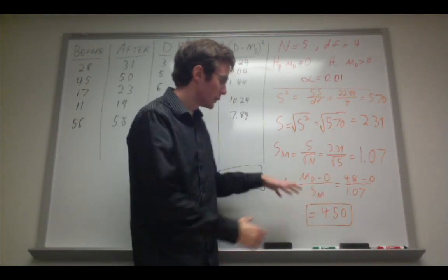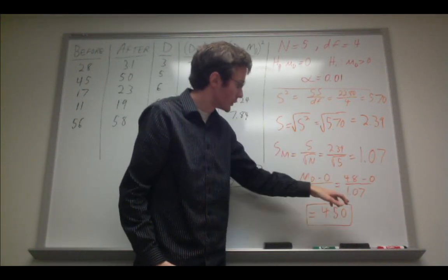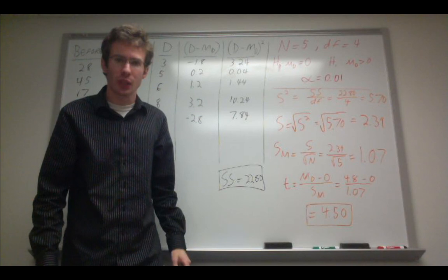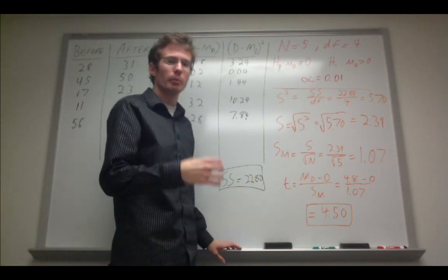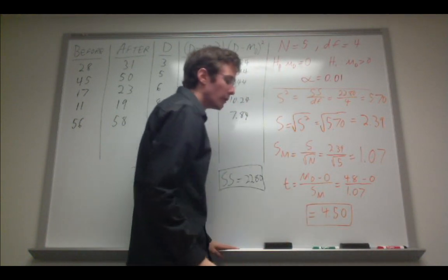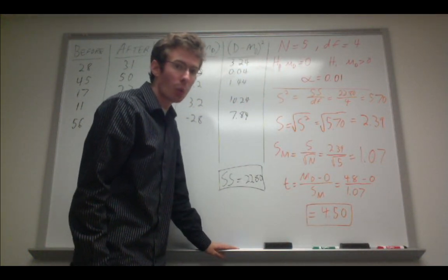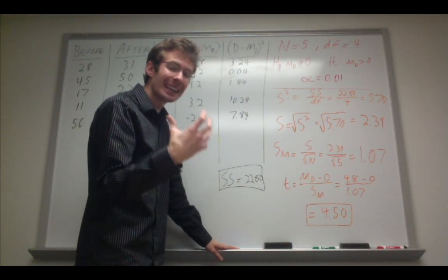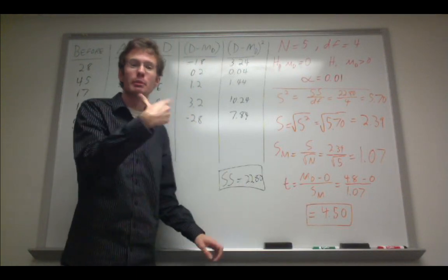So it's 4.8, we just plug in all these numbers, minus 0 divided by 1.07. So compared to a mean difference of 0, I am 4.5 standard errors of the mean away from that. And that is my t-statistic for this repeated measures t-test.